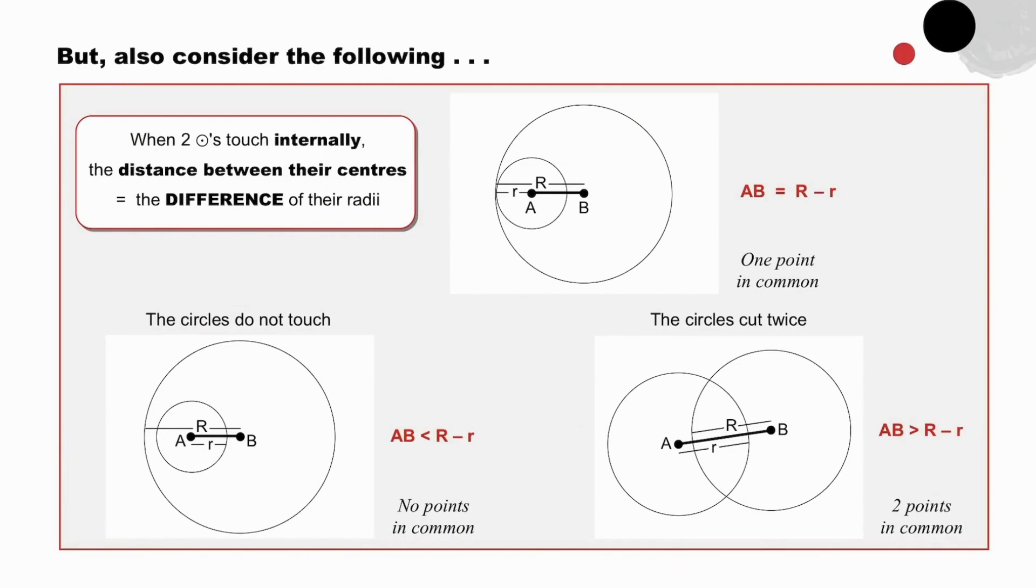You could conclude right now, or entertain yourself considering the scenario of two circles touching internally. Pause to investigate. This time, the distance between their centers is equal to the large radius subtract the small radius. AB equal to the difference in the radii.